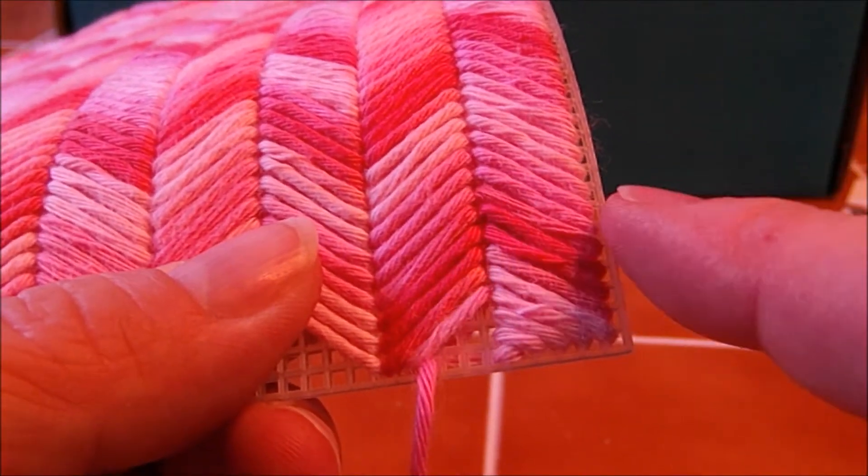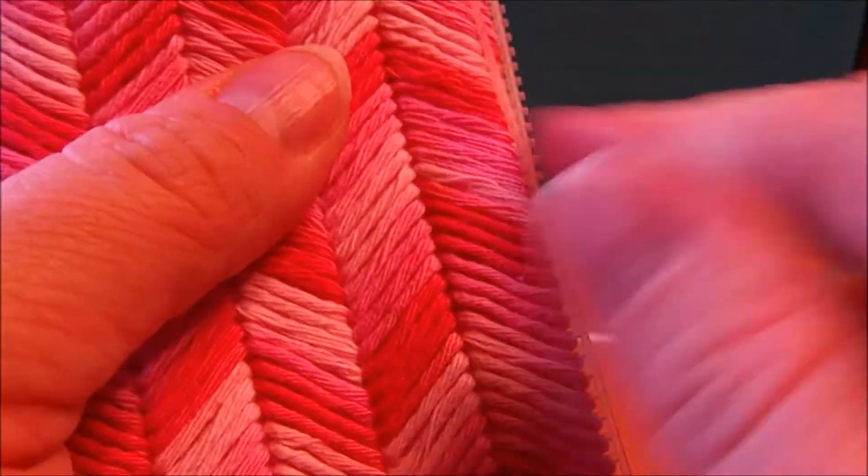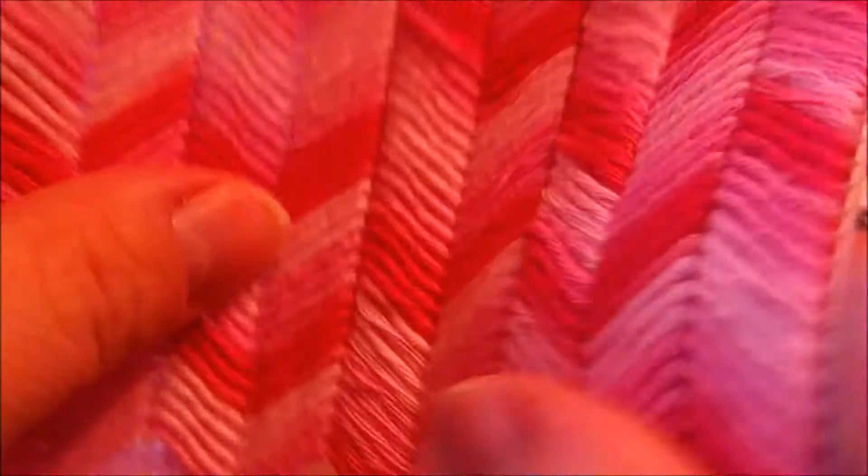If not, just do a shorter row of this on the end. You're not probably going to see it a whole lot by the time it's folded over and then stitched together. So do what you have to do.